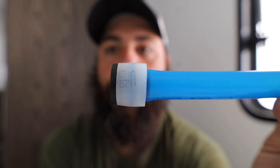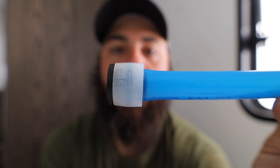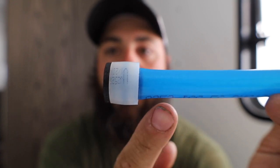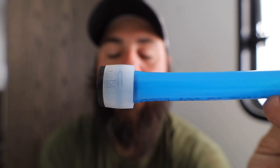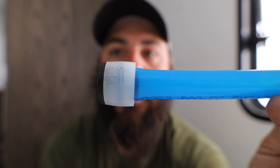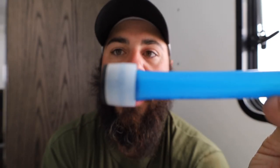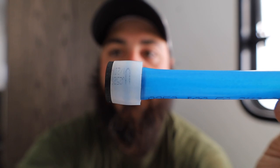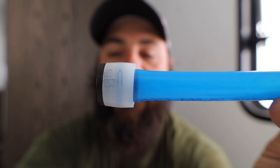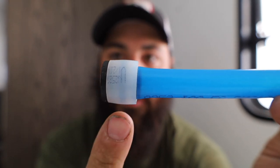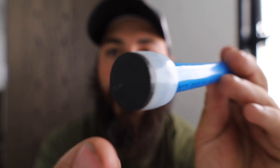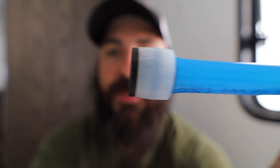So here's the components of a Propex connection. You've got your Pex line, which this happens to be made by Uponor and it's called Aquapex, and then you've got the expander ring, and then you've got your fitting which in this case is a plug.